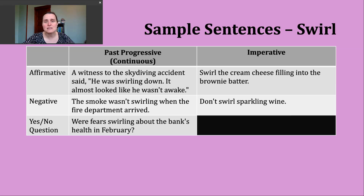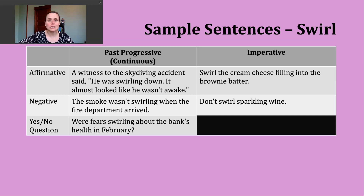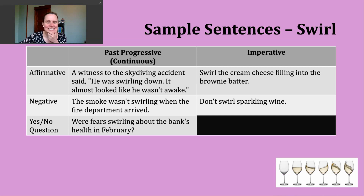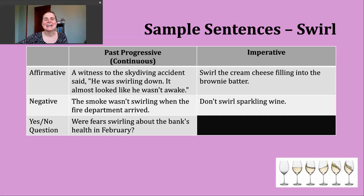To make a negative imperative sentence, begin with do not and then the base verb. Example: don't swirl sparkling wine. This sentence might not make a lot of sense at first, but if you've seen people swirl their glass to make the wine move in a circular motion, apparently you're not supposed to do that with sparkling wine. It would be a command from someone who knows a great deal about how to properly drink different types of wine.